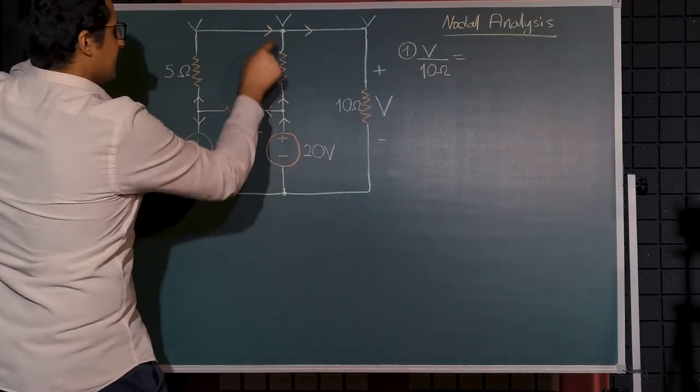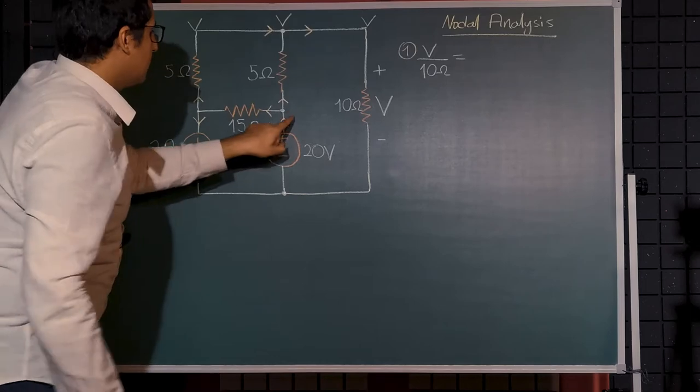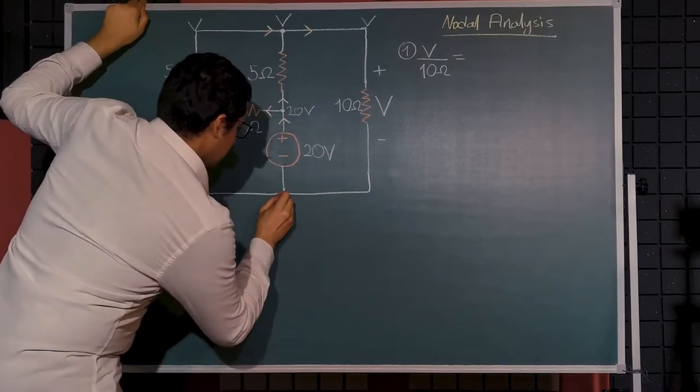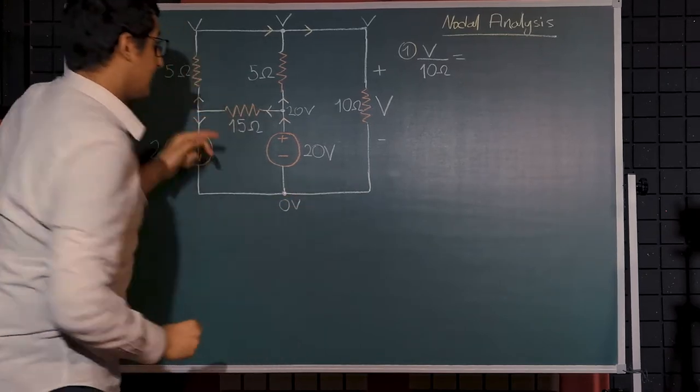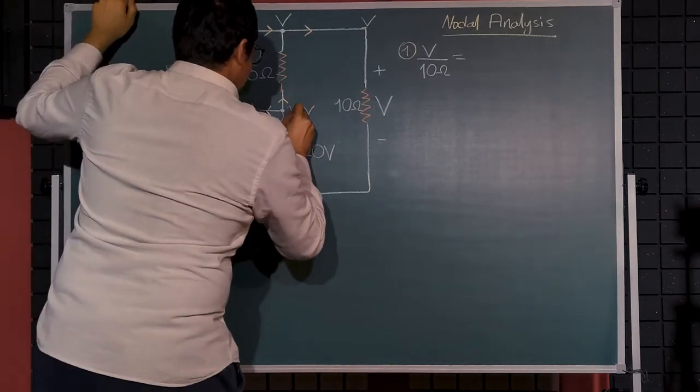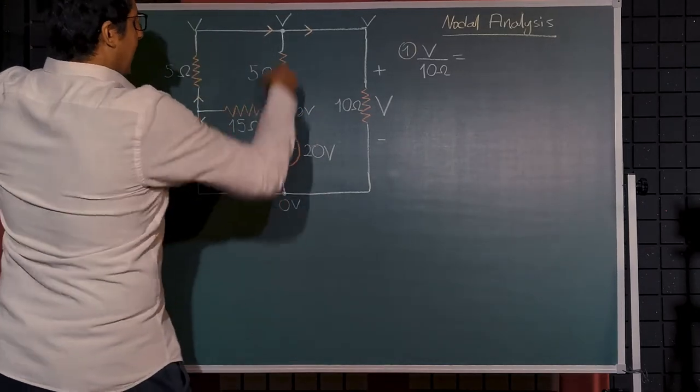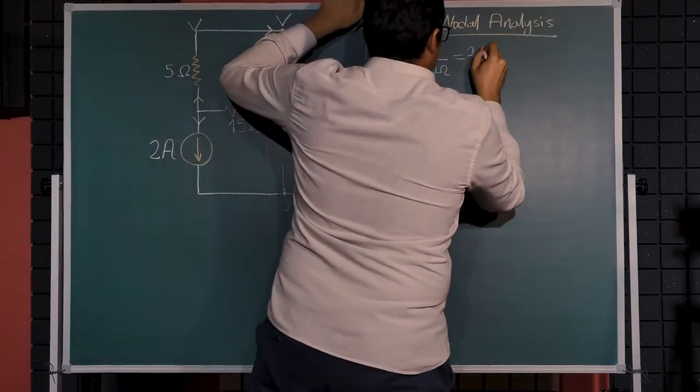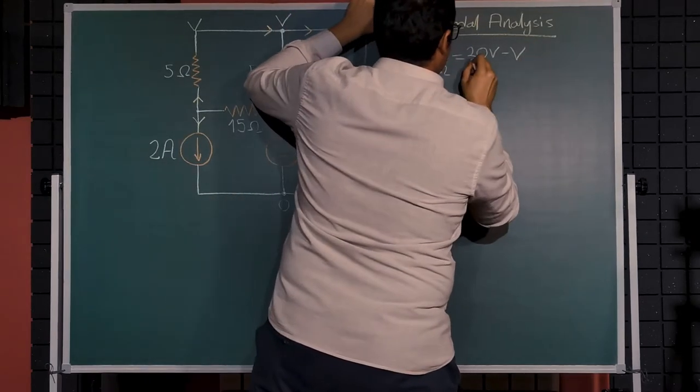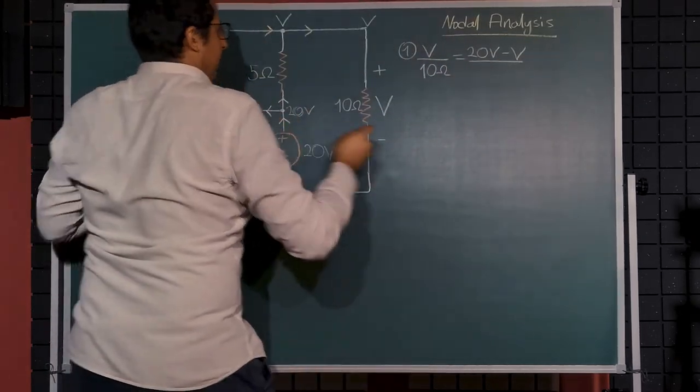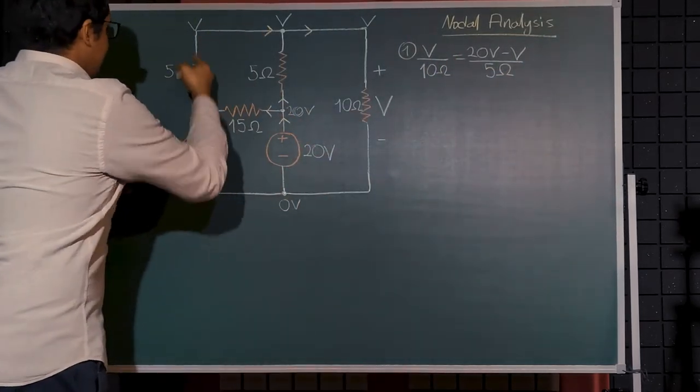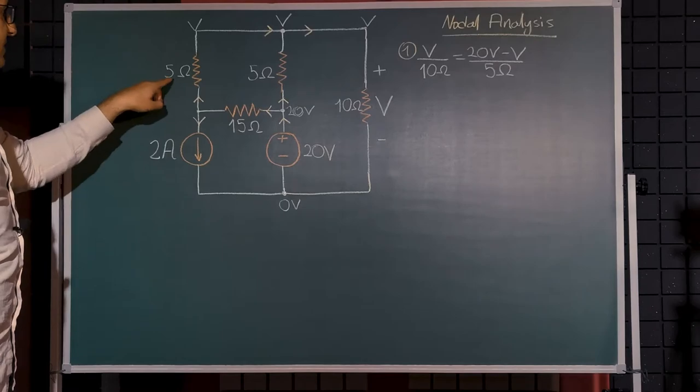What is this current? It is simply the voltage at this node minus the voltage at this node. The voltage at this node is 20 volts, since I assume that this node is 0 volts, it's a ground node, it is my reference node in the circuit. Therefore, the current must be 20 volts minus v divided by 5 ohms.